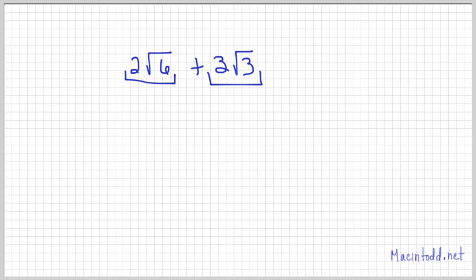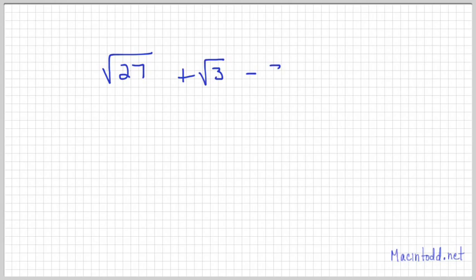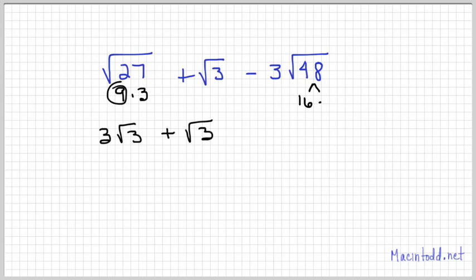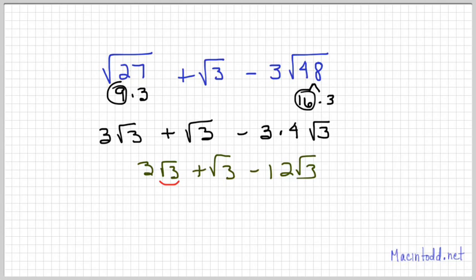In some cases we can do things. For example, in this problem all my radicands are different but not in simplest form yet. √27 is 9 times 3, so that's 3√3. √48 is 16 times 3, so that's 3 times 4√3, or 12√3. I've got 3√3 plus √3 minus 12√3—these are all like radicals.